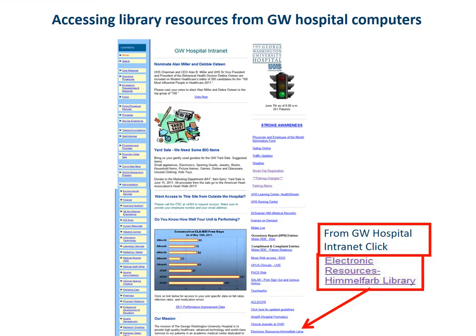When you want to use the library website from a computer in the hospital, on the GW intranet page, if you scroll down to the bottom on the right side, you'll see a link that says Electronic Resources Himmelfarb Library. Click that.